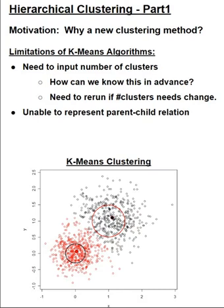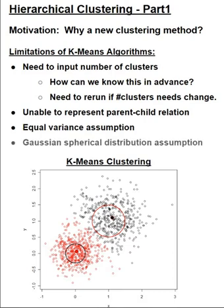The second limitation is if your data clusters have parent-child relationship then it cannot be represented. Third, there is an equal variance assumption in the underlying math for k-means, and is that realistic for your data to have equal variance for all your clusters? Lastly, the data generating process is assumed to be produced by Gaussian spherical distributions, and what if your data is not compliant with that assumption? Then k-means is not an ideal solution.